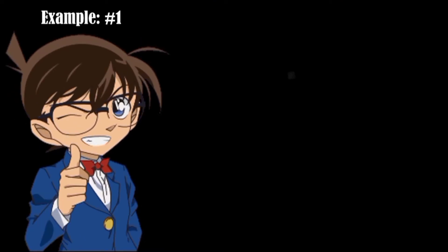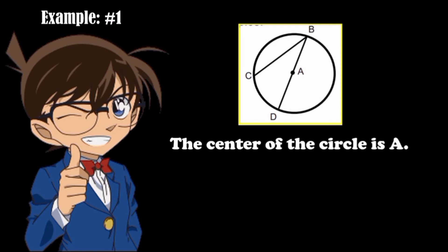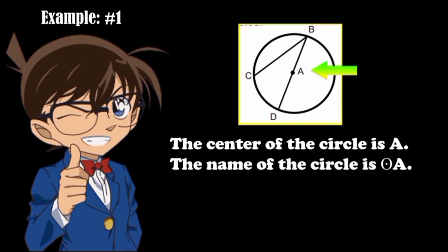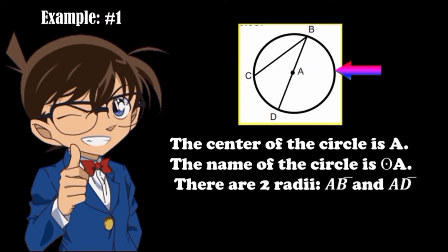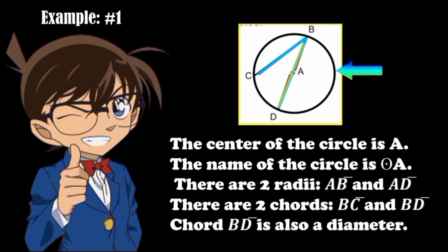Example number one. Look at the given illustration. Let's identify the parts of the circle. The center of the circle is point A. Therefore, the name of the circle is Circle A. There are two radii: line segment AB and line segment AD. There are two chords: line segment BC and line segment BD. Chord BD is also a diameter.